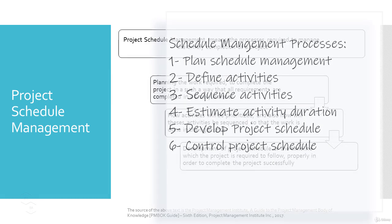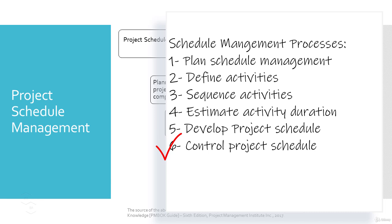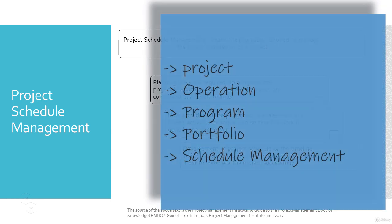The processes of schedule management include plan schedule management, define activities, sequence the project activities in the correct order, estimate activity duration, develop the project schedule, and lastly the control project schedule process. Moving forward, we are going to perform all these steps in Oracle Primavera P6. We have discussed the difference between project and operation, defined program and portfolio, and learned the project management and project schedule management concepts. Now let's move forward to our next topic and I will see you in the next lesson.